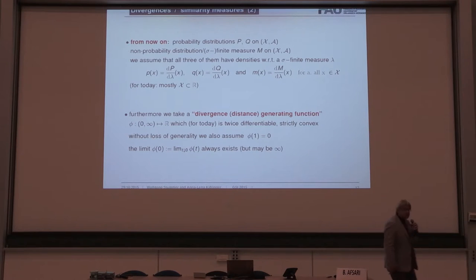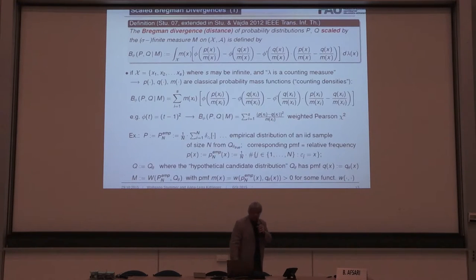That's how it works. We want to measure the distance between P and Q. And we suppose that they have a density, maybe the frequency, if the reference measure is the counting measure, or the classical densities. And we have a scaling measure, which need not be a probability measure, not be total mass one, but arbitrary. And it also has a density, and I always use small letters for this. And this generating function should be twice differentiable and strictly convex. And then, a few years ago, for instance, in IEEE transactions information theory, we introduced the scaled Bregman divergences, or scaled Bregman distances. Here is the formula.